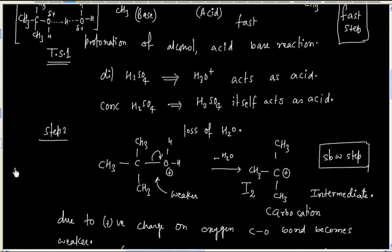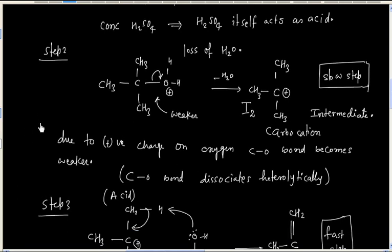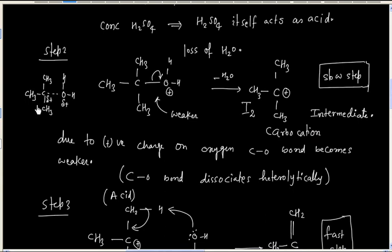In transition state 2, the carbon-oxygen bond is being broken. Oxygen will have a delta-plus charge and carbon will have a delta-plus charge — carbon is gaining some positive charge and oxygen is losing some positive charge. This is transition state 2.